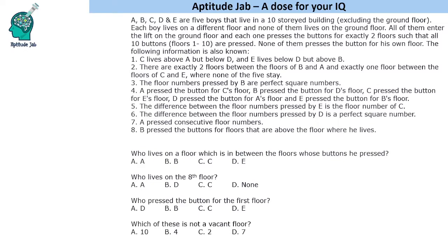Welcome to aptitude. This problem states that there are five boys who live in a building that has 10 stories, excluding the ground floor. Each one lives on a different floor, none of them lives on the ground floor. They enter a lift and each one presses the buttons of exactly two floors so that all 10 buttons are pressed. None of them presses the button for his own floor.